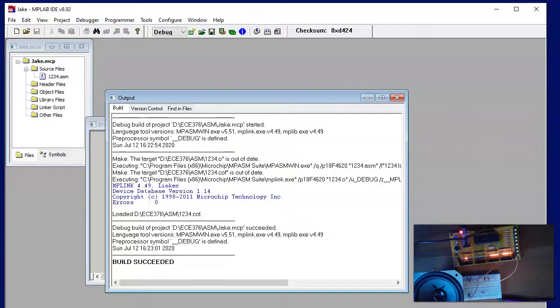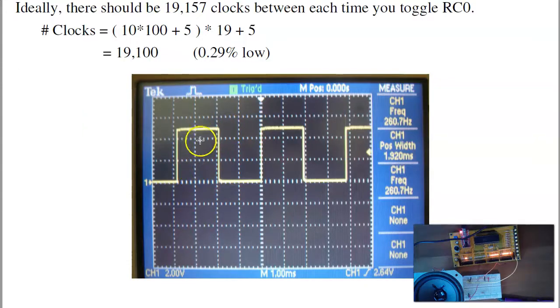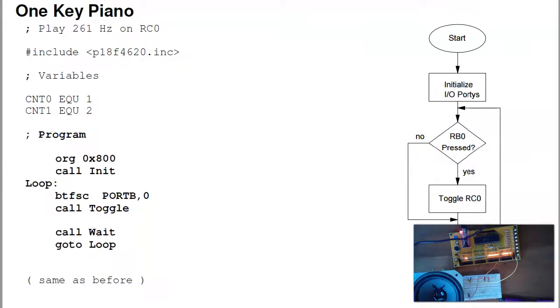That kind of illustrates some of the timing. We can design a program to output a square wave at precisely 261 hertz. Now, this program's kind of annoying. It's always playing a note. So let's build a one-key piano.